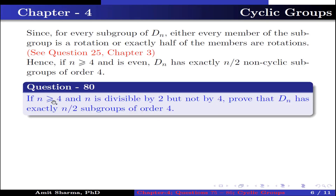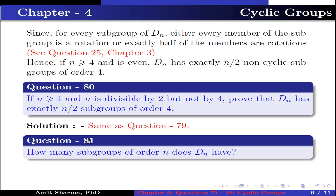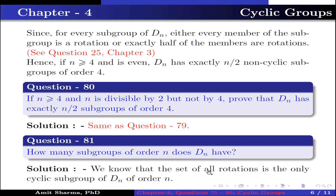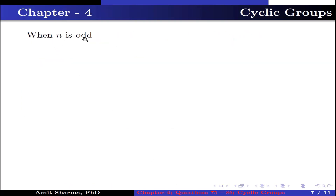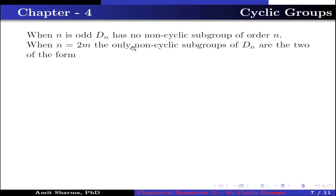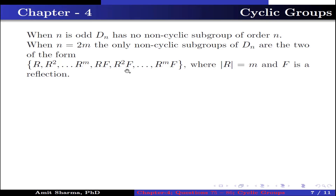Question number 80. If n ≥ 4 and n is divisible by 2 but not by 4, prove that Dₙ has exactly n/2 subgroups of order 4. This is the same as question number 79. Question number 81. How many subgroups of order n does Dₙ have? The set of all rotations is the only cyclic subgroup of Dₙ of order n. When n is odd, Dₙ has no non-cyclic subgroup of order n. When n = 2m (even), the only non-cyclic subgroup is of the form {r, r², …, rᵐ, rf, r²f, …, rᵐf}, where the order of r is m and f is a reflection.